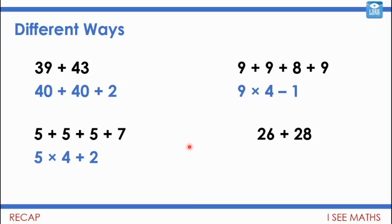For 26 plus 28, my favourite thing is to add 2 lots of 25, which is 50, and then think: 26 is 1 more than 25 and 28 is 3 more than 25, so it must be 4 more than 50 — giving 54.